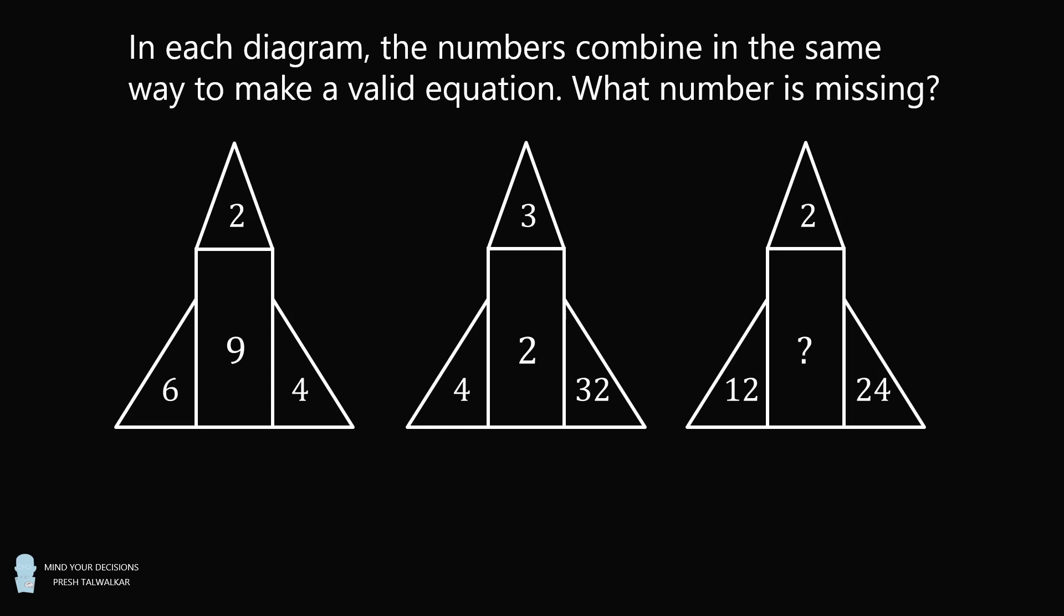In each diagram, the numbers combine in the same way to make a valid equation. What number is missing? The answer choices are 16, 8, 13, 6, and 10.